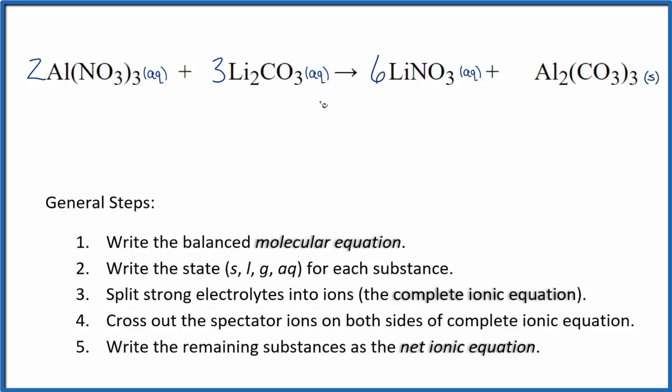Compounds with carbonates in general are insoluble, except when we have group one elements like lithium, sodium, potassium. So lithium carbonate is soluble, but aluminum carbonate, aluminum is not in group one. So aluminum carbonate is going to be a solid. That means it's going to fall to the bottom of the test tube as a precipitate. So those are the states.